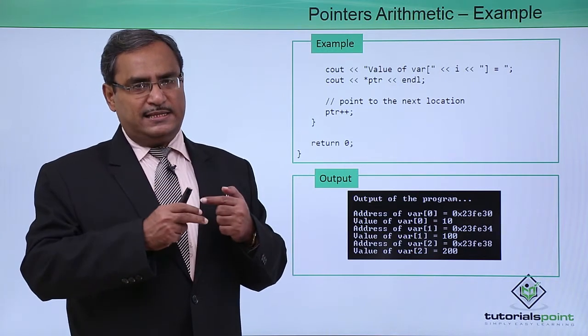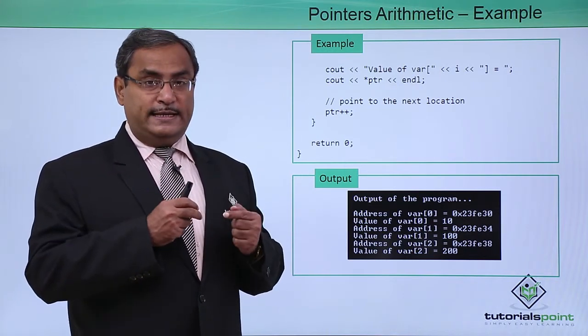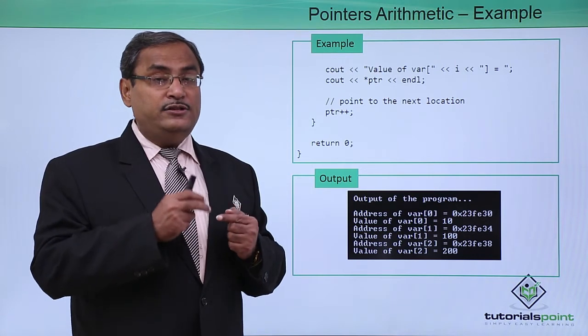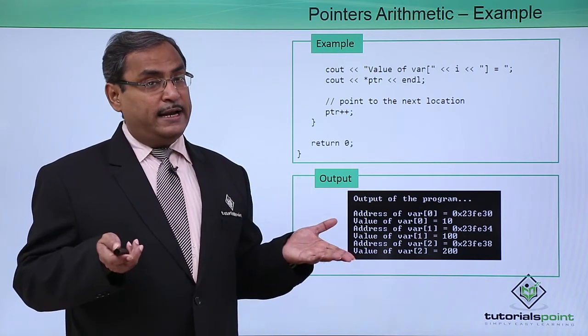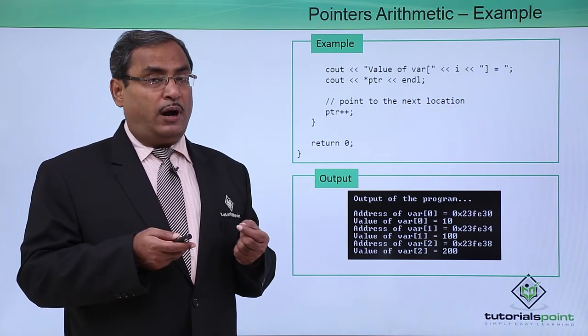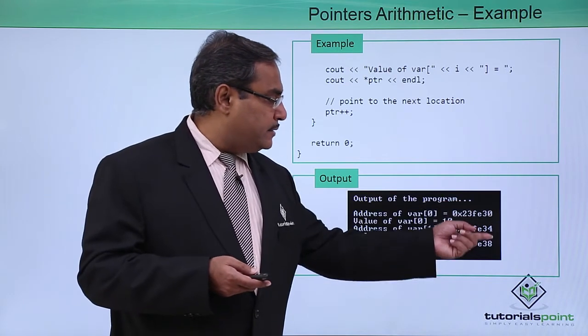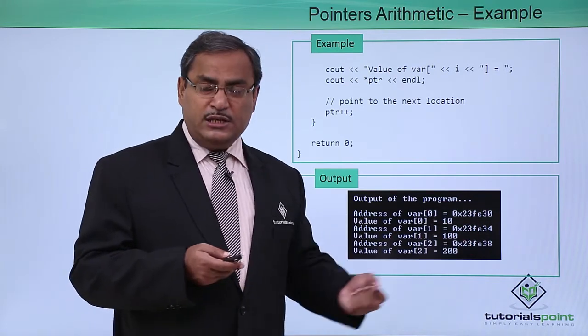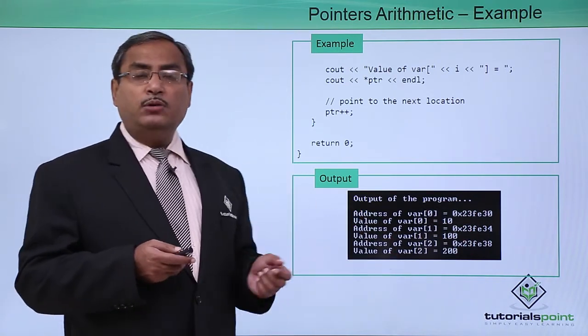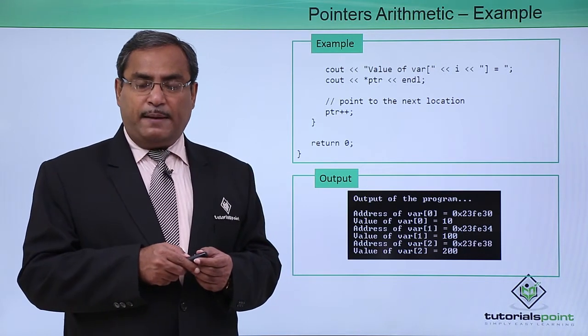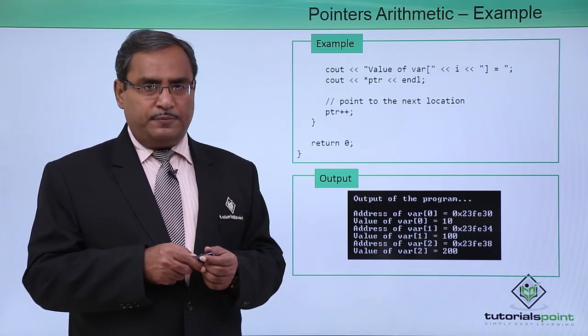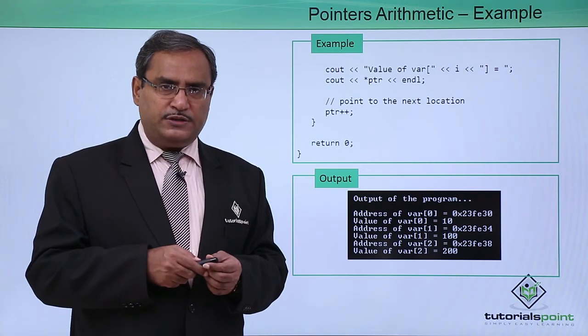That is why when we are trying to increase this PTR by 1, it is getting increased by size of integer. If I increase this PTR by 2, ultimately it will get increased by 8. In this way we have explained how arithmetic operators can be applied on pointer type of variables. Thanks for watching this video.